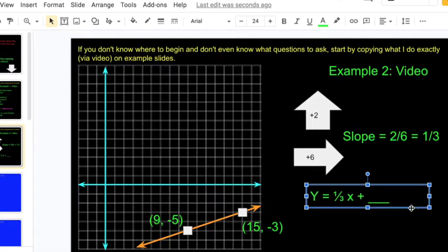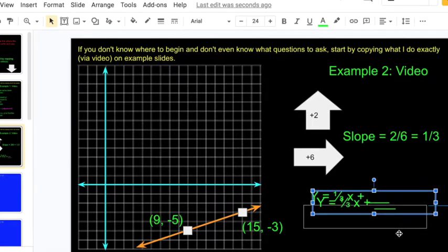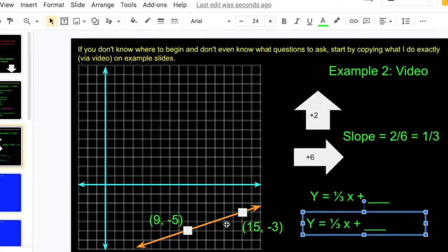Because I can't see the adjustment, I'm going to insert one of these points. Let's say I choose 9, negative 5.